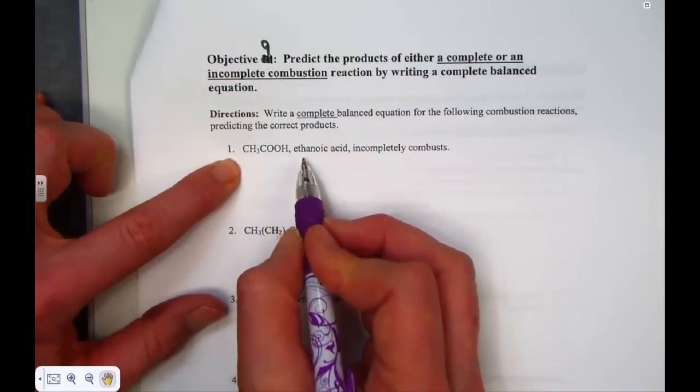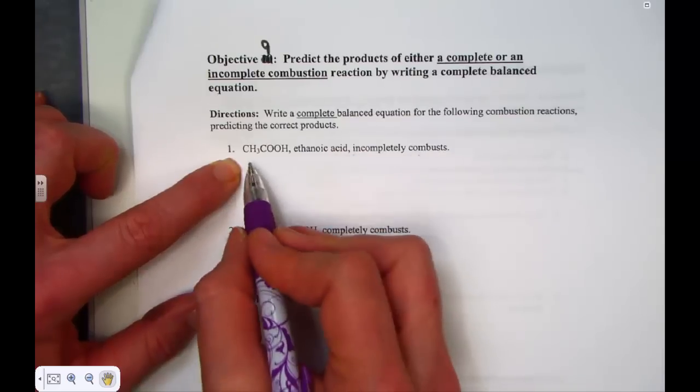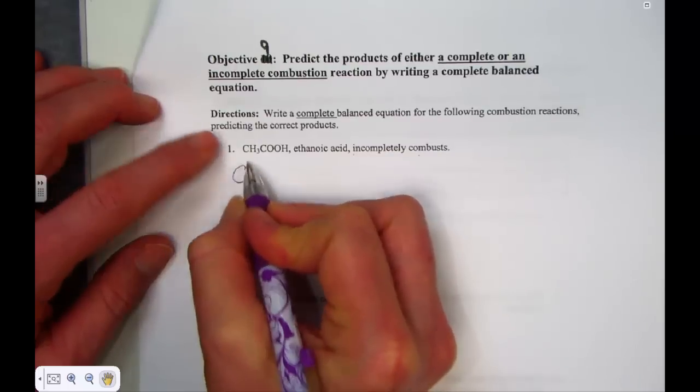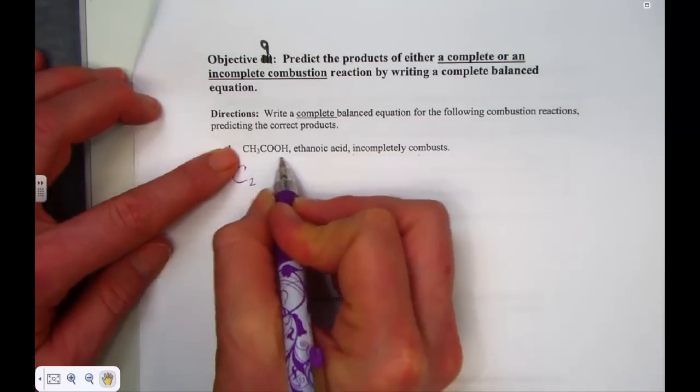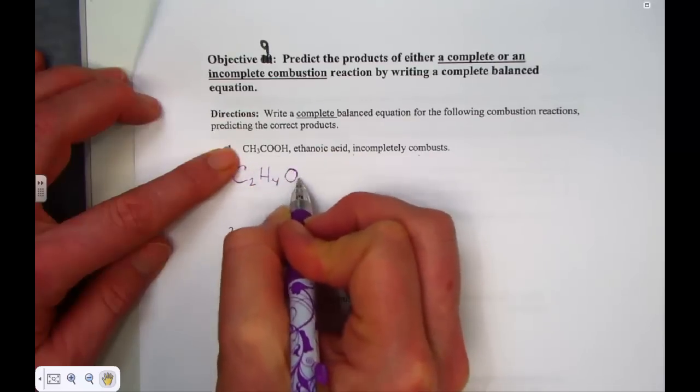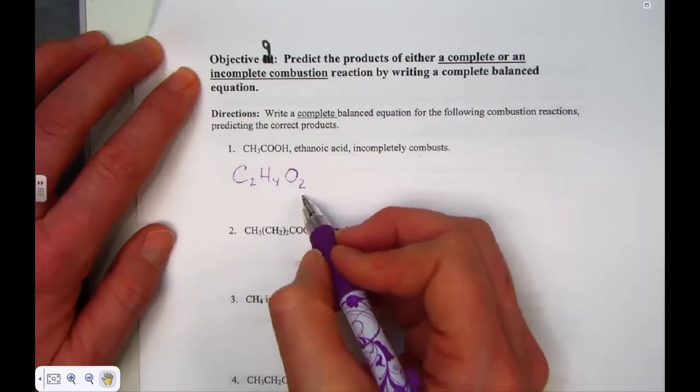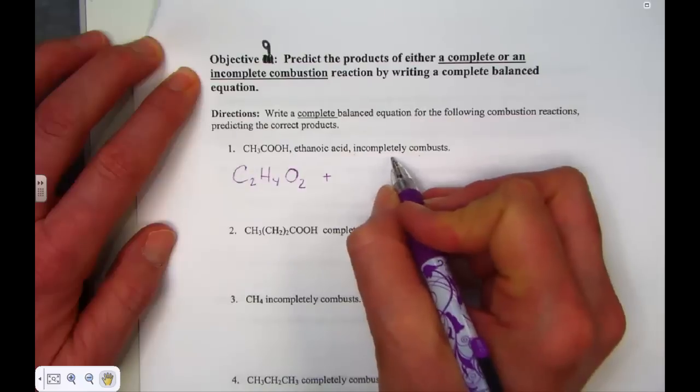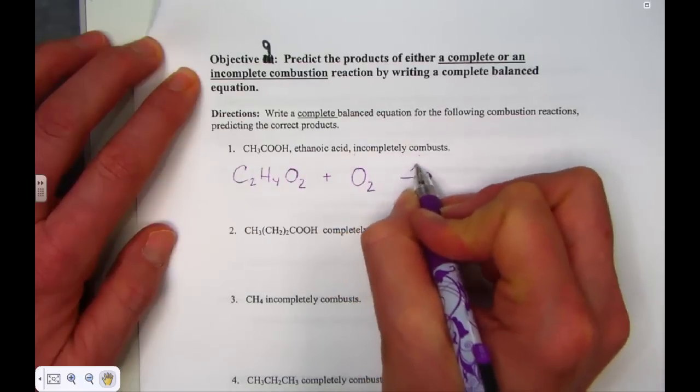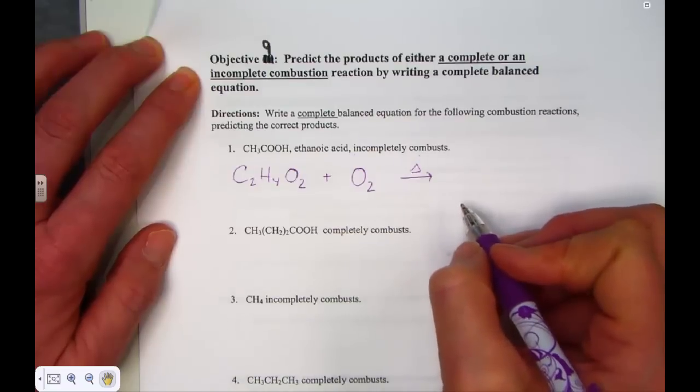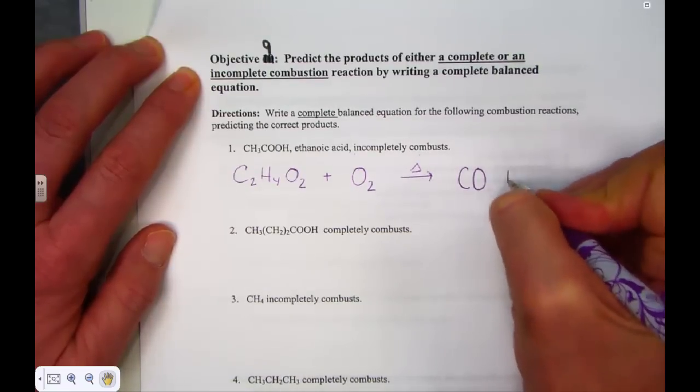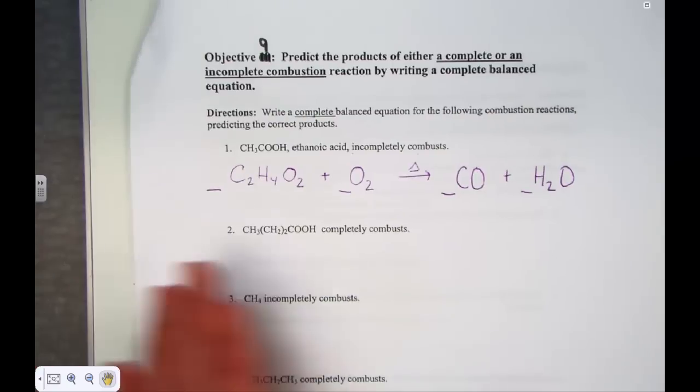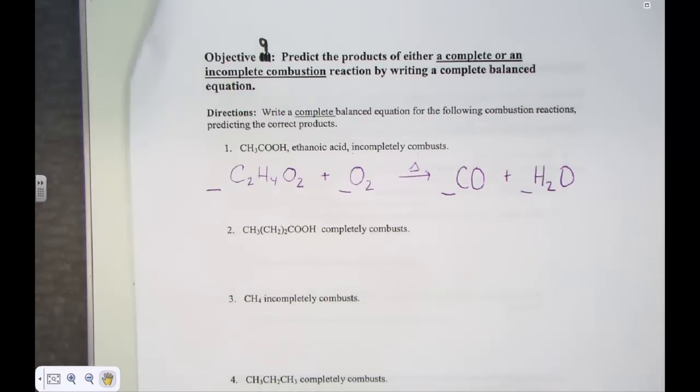The first one reads ethanoic acid incompletely combusts. One of the strategies I like to use is combining like elements for the fuel we are igniting. In ethanoic acid, I count two carbons, a total of four hydrogens, and a combined total of two oxygens. That makes counting when we are balancing go a little easier. C2H4O2, another way of writing ethanoic. When I incompletely combust, the skeleton will tell me, always add oxygen. Anything that's burning requires oxygen. But now, in an incomplete combustion, we form carbon monoxide and water.